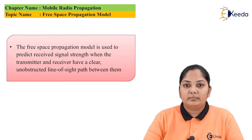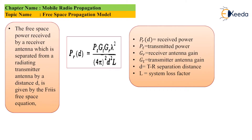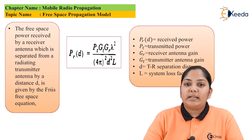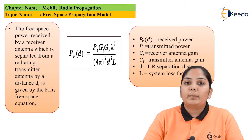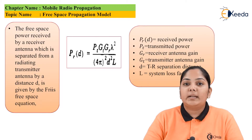The free space power received by the receiving antenna at a certain distance d between the transmitter and the receiver is given by the free space equation, written as: Pr(d) — the received power at distance d — is equal to Pt × Gt × Gr × λ² divided by (4π)² × d² × L.